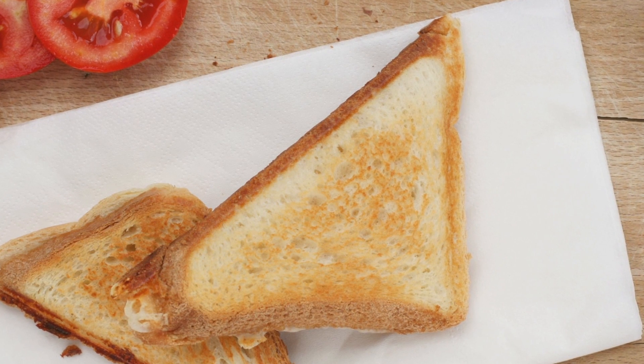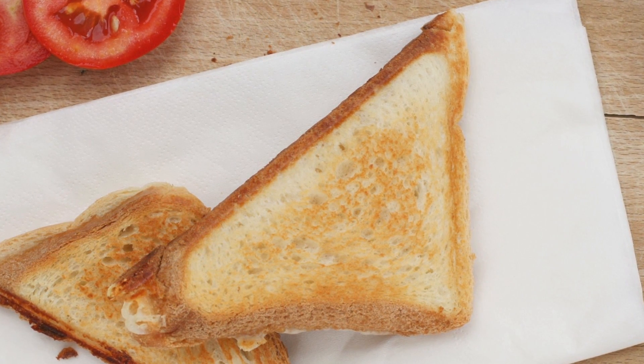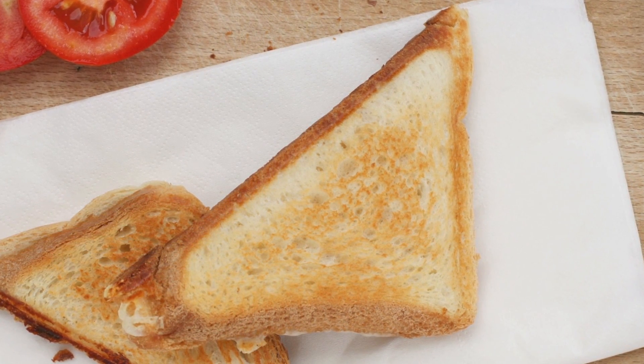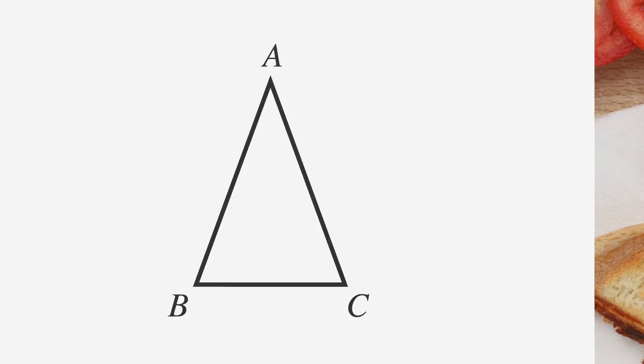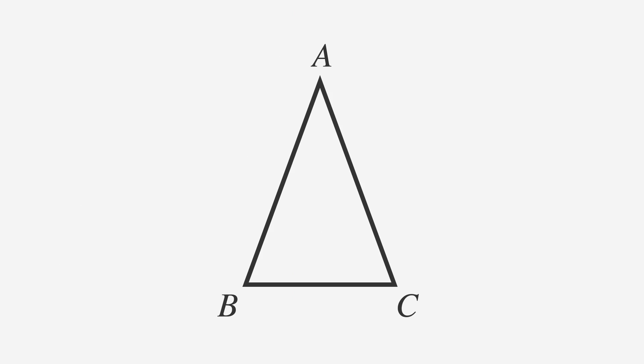Let's take a closer look at the isosceles triangle. If we know that side AB equals side AC, then we know that angles B and C are equal because they're opposite sides AC and AB.